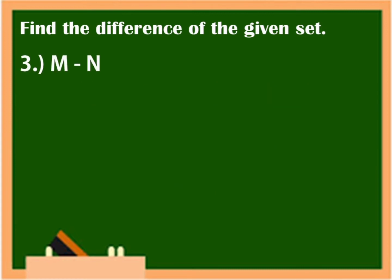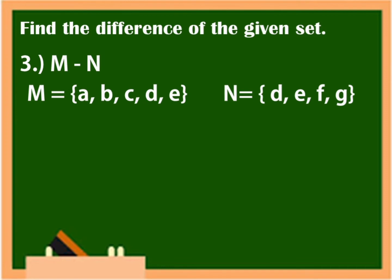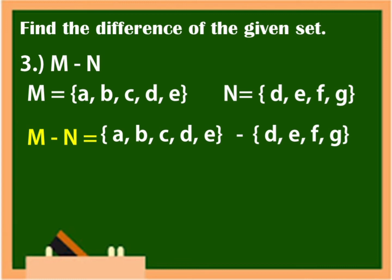Next example: find the difference between M and N if M is equal to {A, B, C, D, E} and N is equal to {D, E, F, G}. So, what is the difference between M and N? Again, we are going to list the elements of set M — which are A, B, C, D, E — minus the elements of N which are D, E, F, G. What are the elements that we are going to remove in set M that also belong to set N? That is D and E.